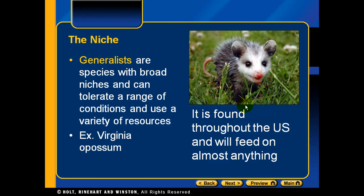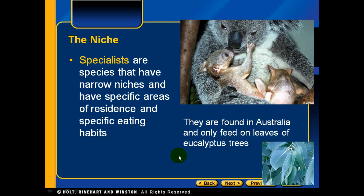Generalists are species with broad niches — they can tolerate a range of conditions and use a variety of resources. An example is the Virginia opossum, found throughout the United States, which will feed on almost anything. In contrast, specialists are species that have narrow niches with specific areas of residence and specific eating habits. For example, koala bears are found in Australia and only feed on the eucalyptus tree and its leaves — a very specific, very narrow niche. That finishes our podcast for Section 2.